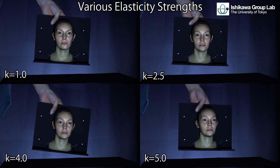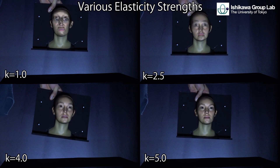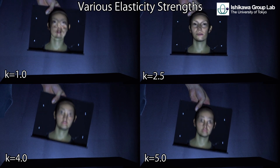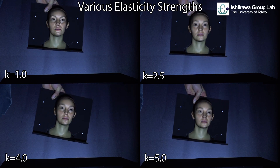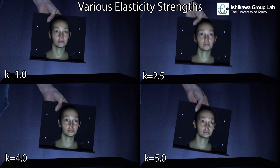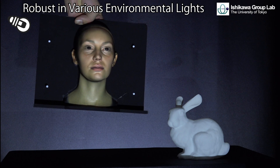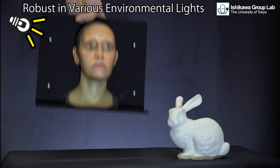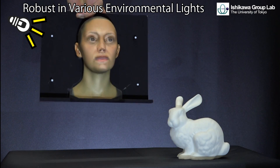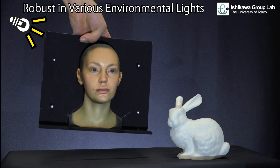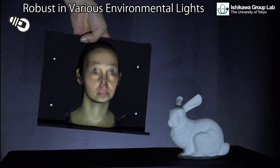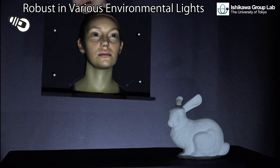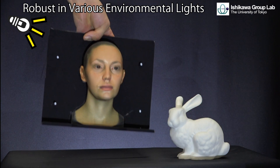Next, here are the results of projections with various degrees of elasticity. In our system, the global strength of elasticity is expressed as a spring constant. The following are the results of projections under various environmental lighting conditions. Since the environmental lighting is estimated in real-time, it is possible to keep the illusion in conditions where lighting changes over time, such as party venues or concert halls.